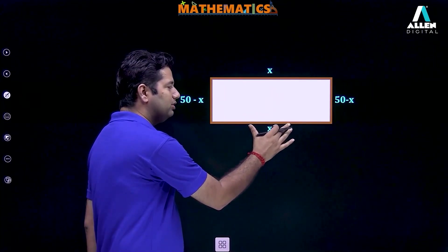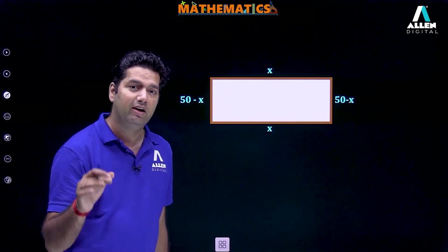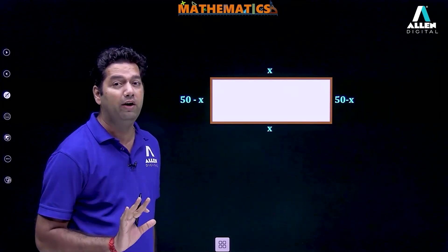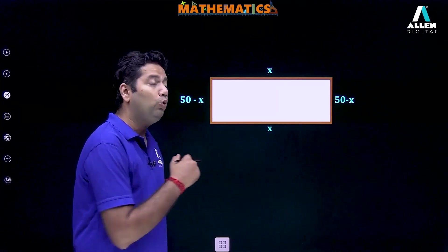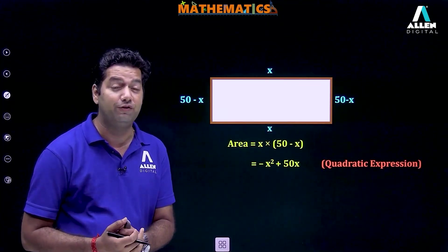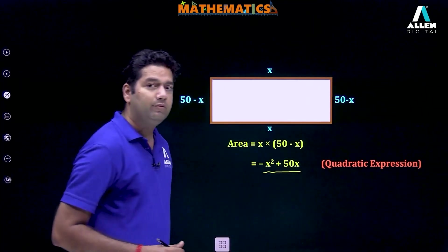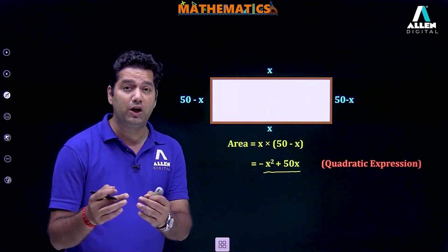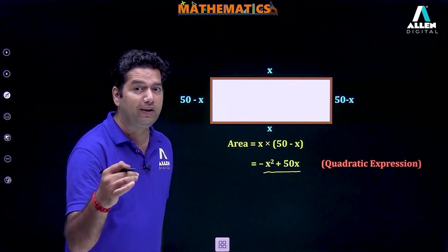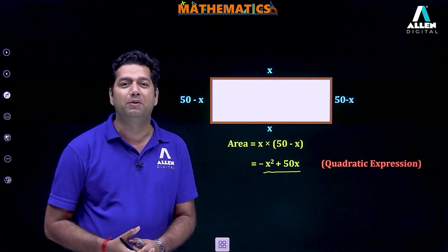Let's suppose one dimension is equal to x and the other is equal to 50 minus x. The dimension is x and 50 minus x, but the length of the rope is fixed at 100. If I want to calculate the area, then that will be equal to x into (50 minus x), which equals minus x square plus 50x. So a quadratic expression is formed here. By the concepts we are going to learn in this chapter, we can calculate the value of x at which we can obtain the rectangle of maximum area.